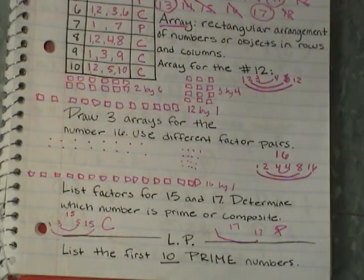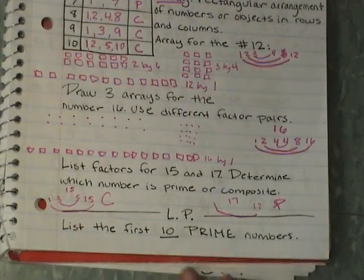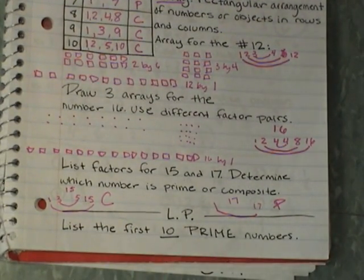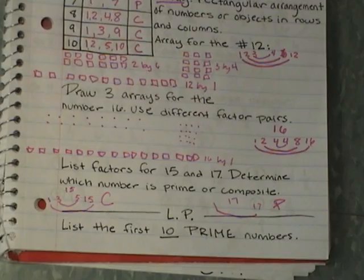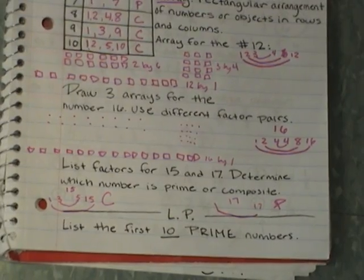Your lesson practice is this: find the first 10 prime numbers. We've already found the first 6, so now find the remaining ones.